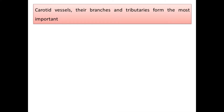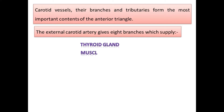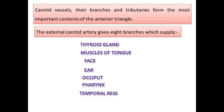Carotid vessels, their branches and tributaries, form the most important contents of the anterior triangle. The external carotid artery gives eight branches which supply the thyroid gland, muscles of tongue, face, ear, occiput, pharynx, temporal region, and a wide area around the mandible.